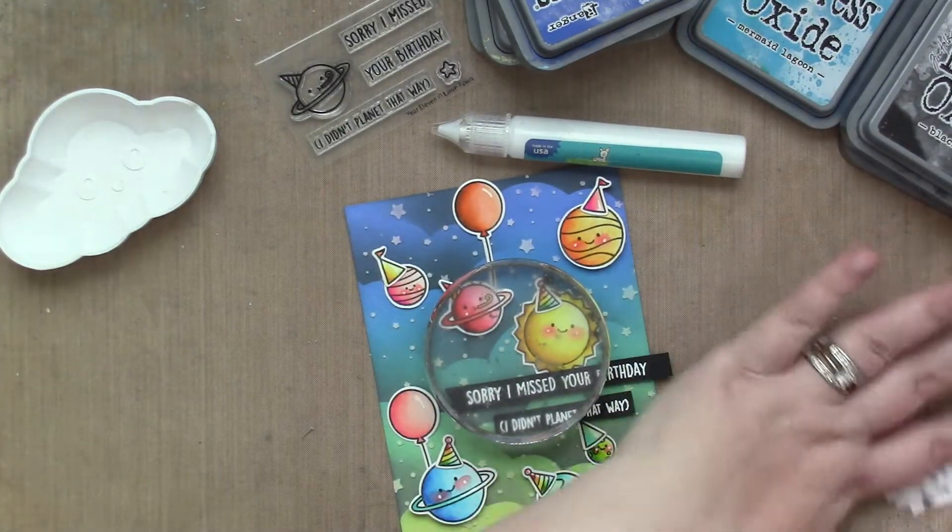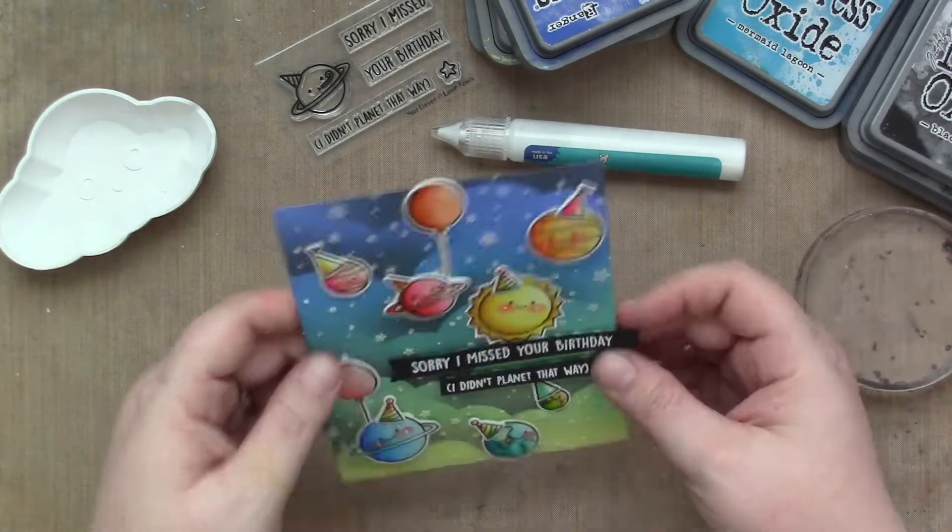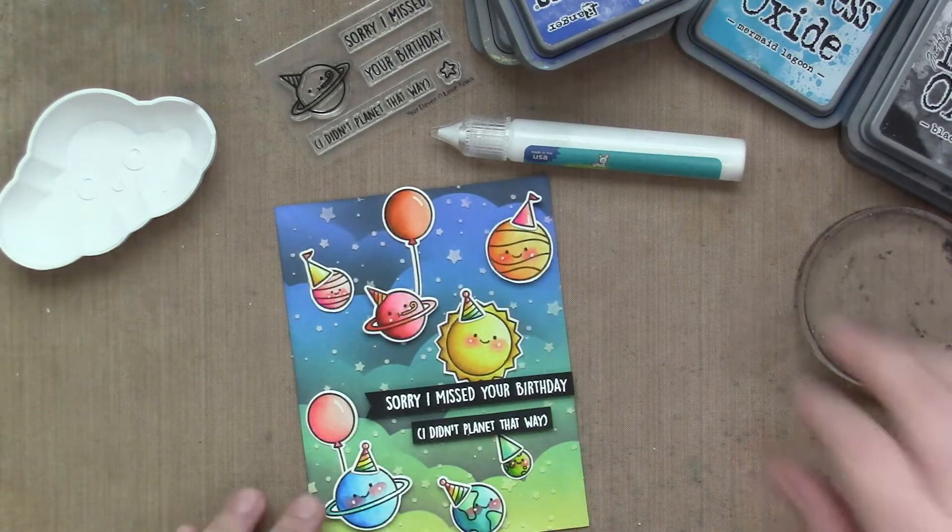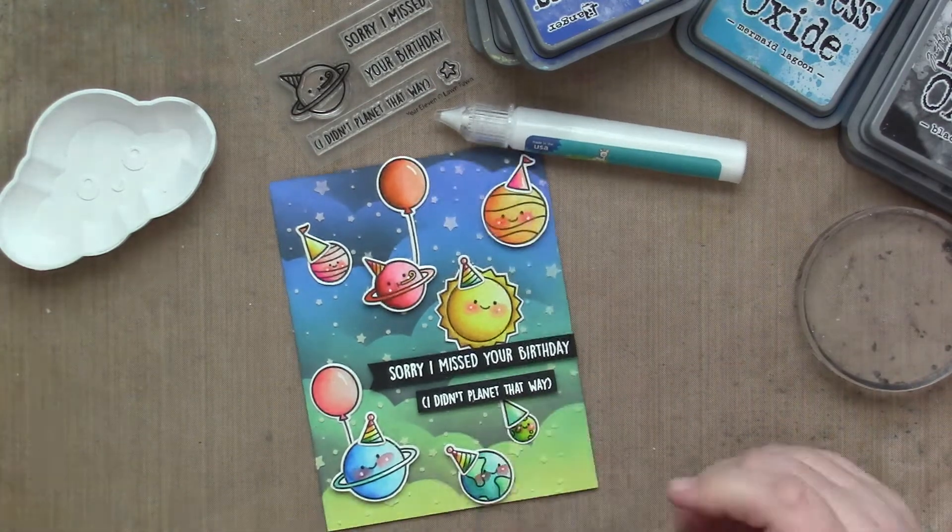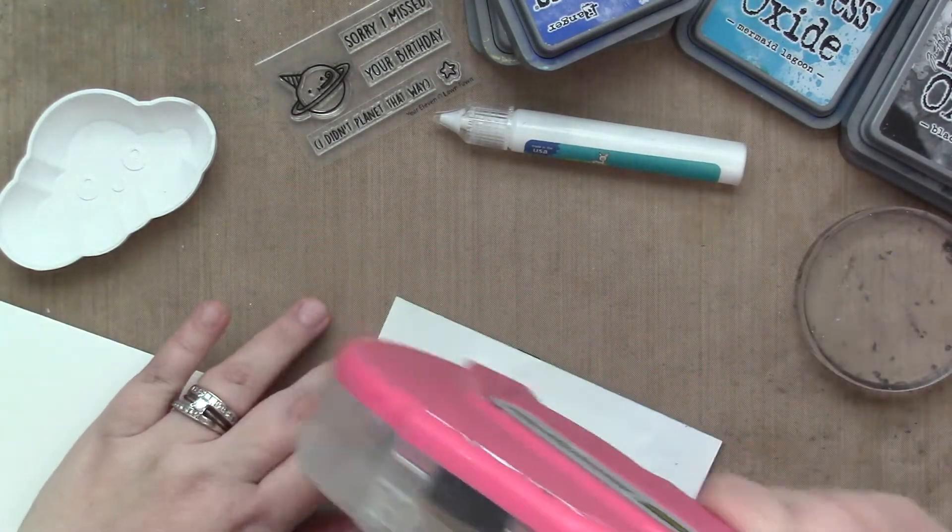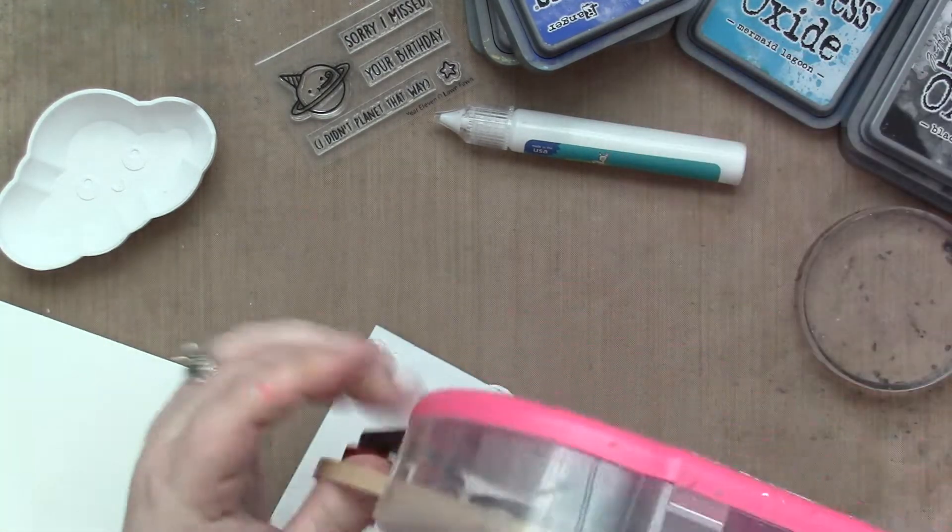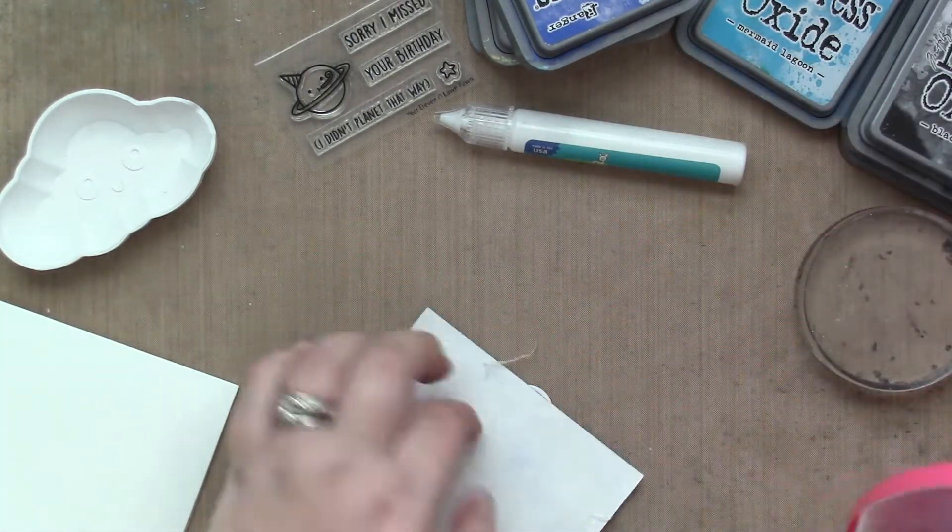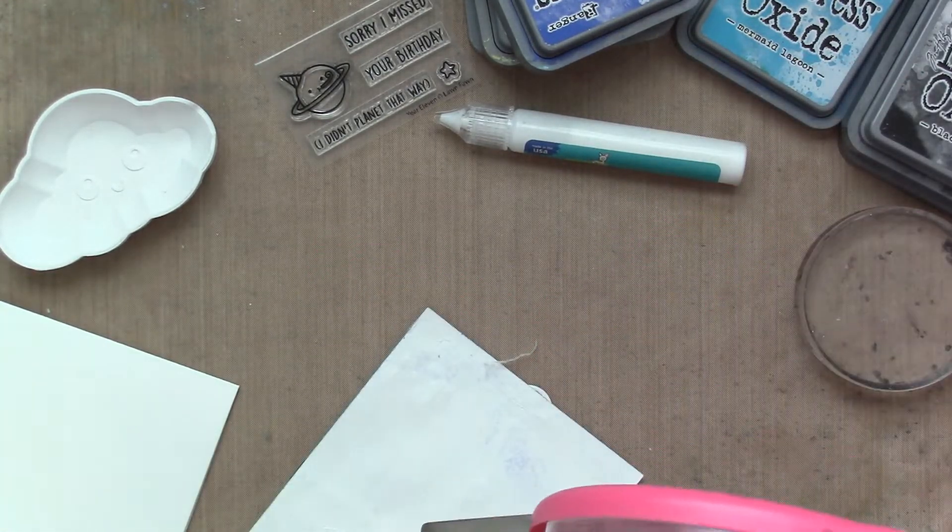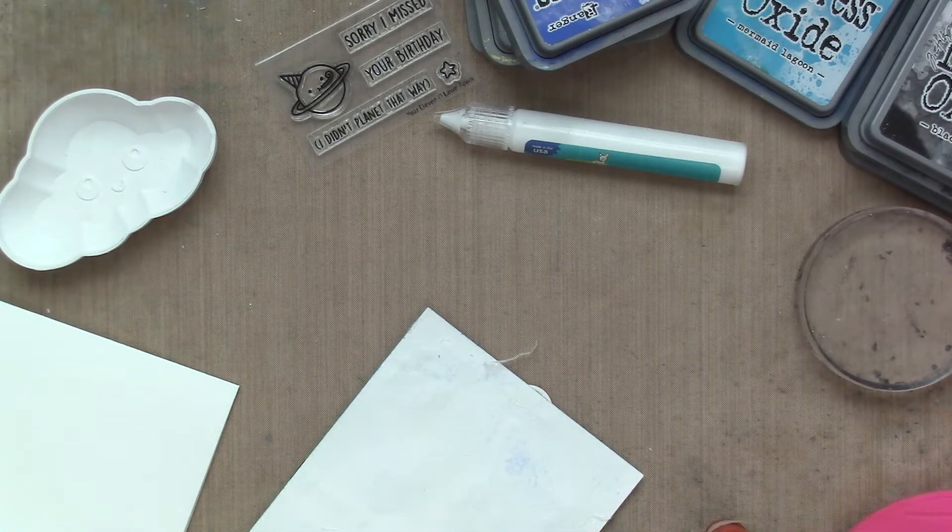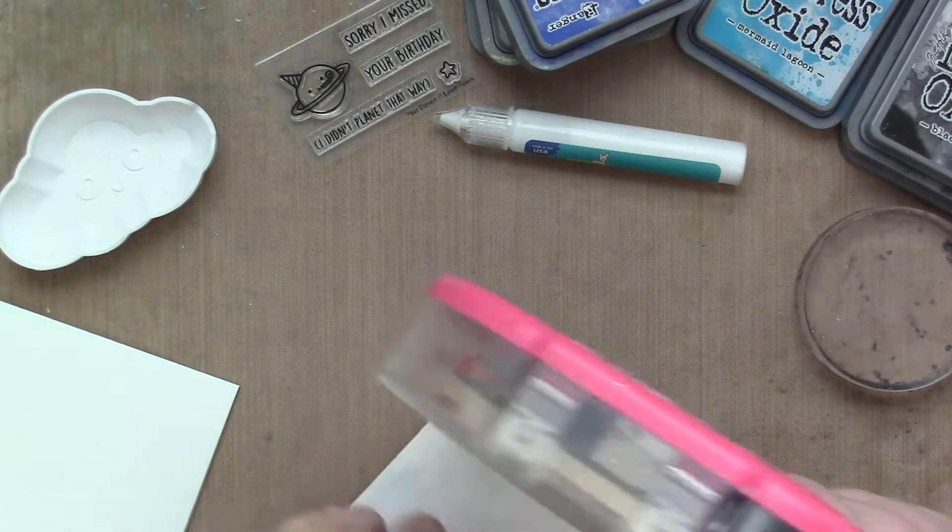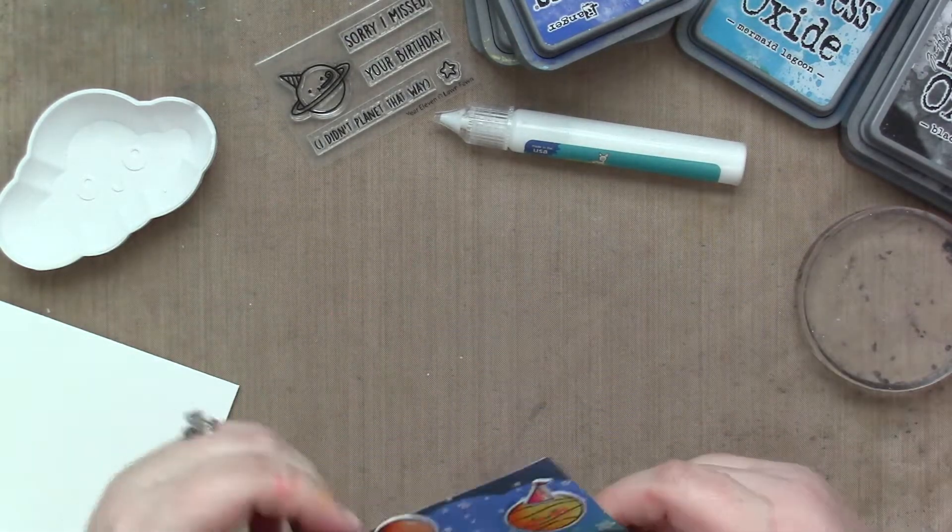So that's my card. I'm just going to trim off that excess sentiment strip and then attach it to a white card base. And that's my card. Oh, I do fight a little bit with my tape runner. It decided it knew that I was recording this card so it had to act up. I did win against the tape runner but it was touch and go there for a minute.